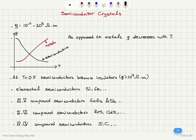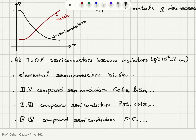We categorize semiconductors as elemental semiconductors like silicon and germanium, three-five compound semiconductors referring to group 3 and group 5 in the periodic table such as gallium arsenide and indium antimonide, two-six compound semiconductors like zinc sulfide and cadmium sulfide, and four-four compound semiconductors, a good example being silicon carbide.